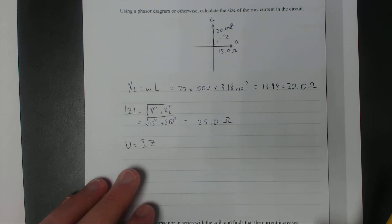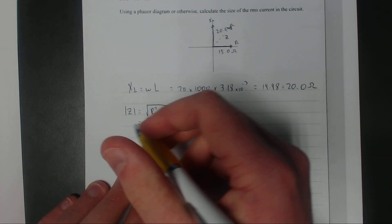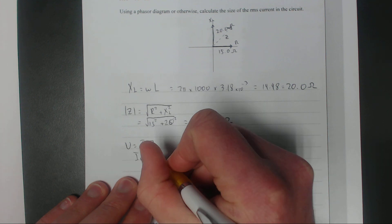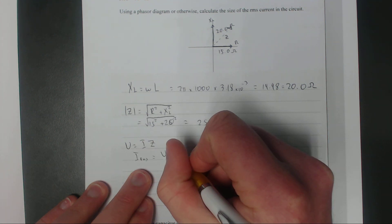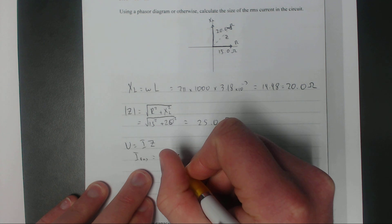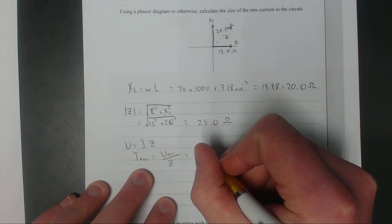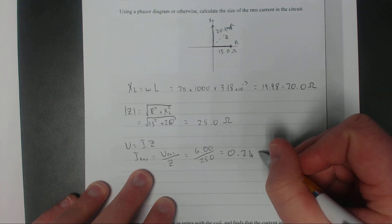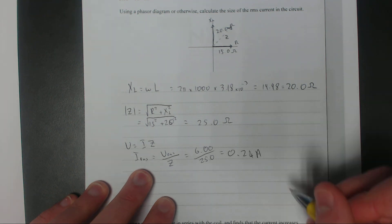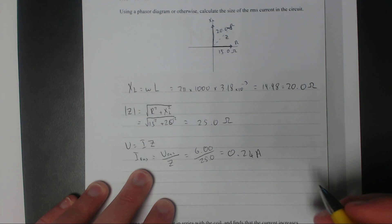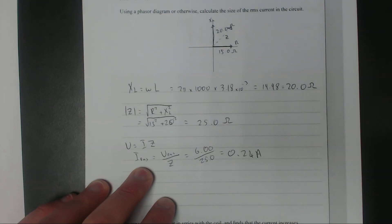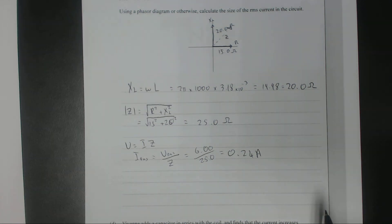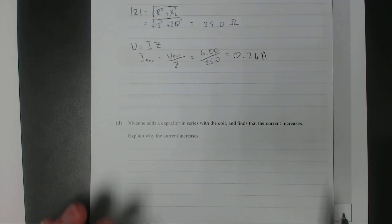So IRMS is going to equal VRMS over Z, the impedance, which is 6.00 over 25.0, which equals 0.24 amps. That should be in 3 significant figures. Do I actually need to work out the direction or the angle? Nope.